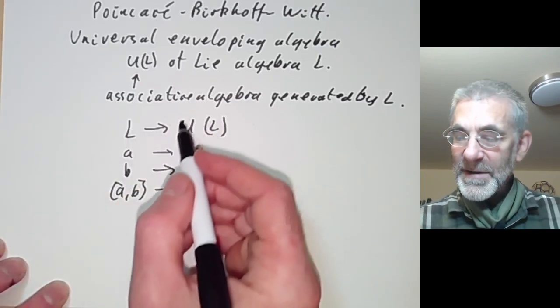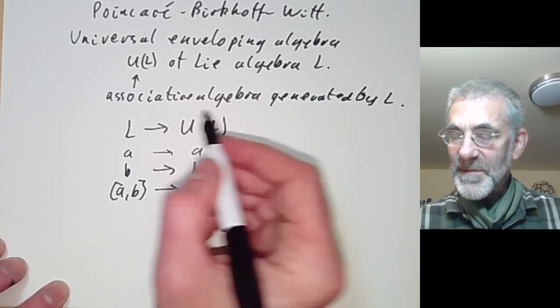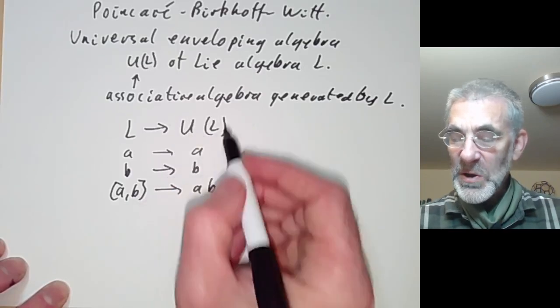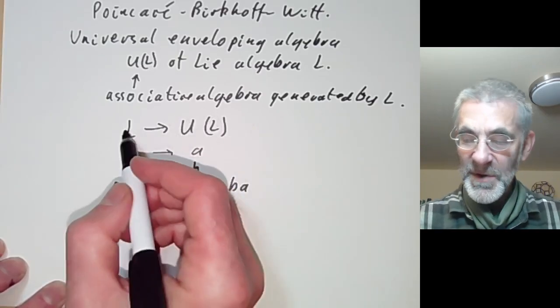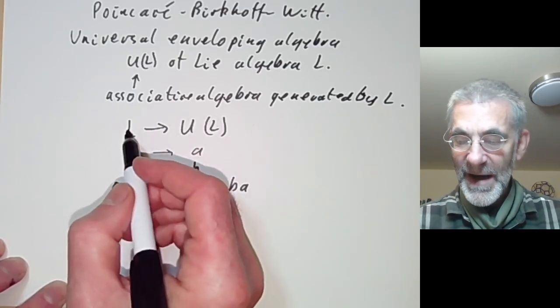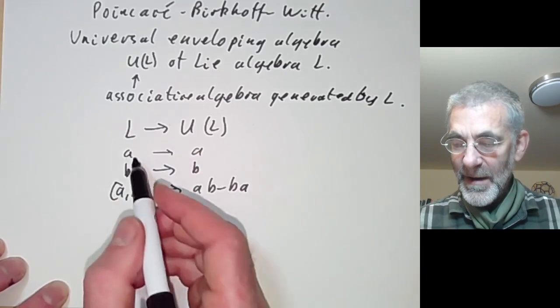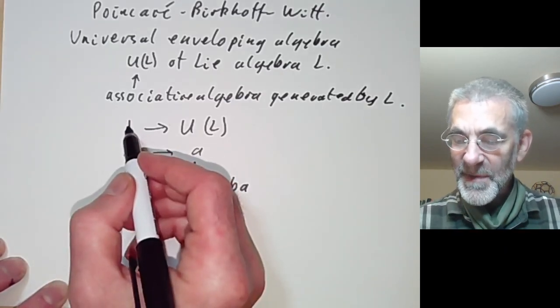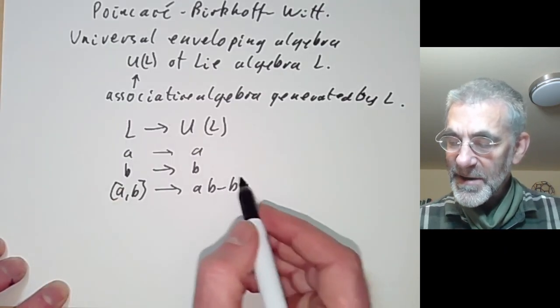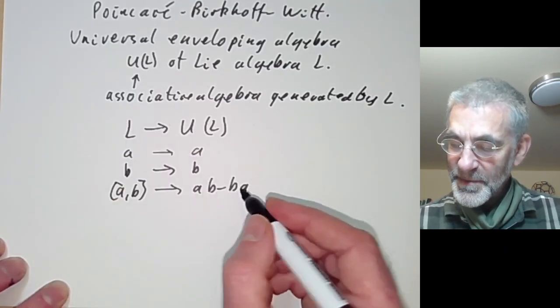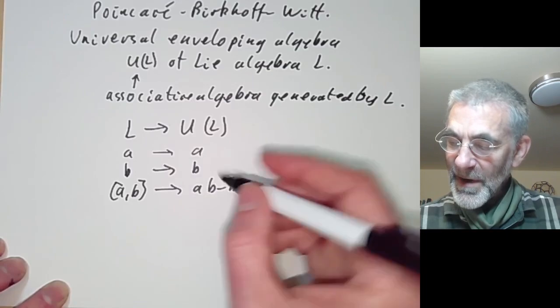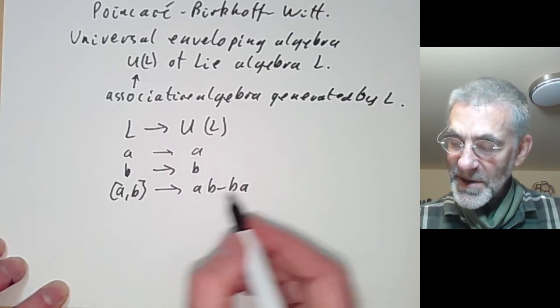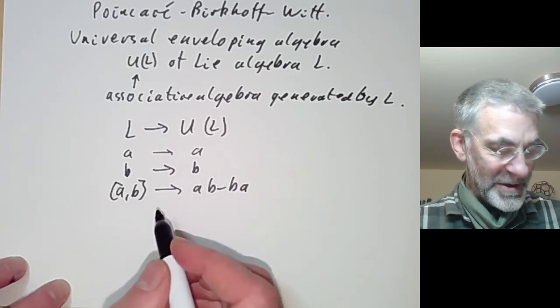We can think of U(L) as being the universal associative algebra generated by L — generated by the vector space L subject to these relations.